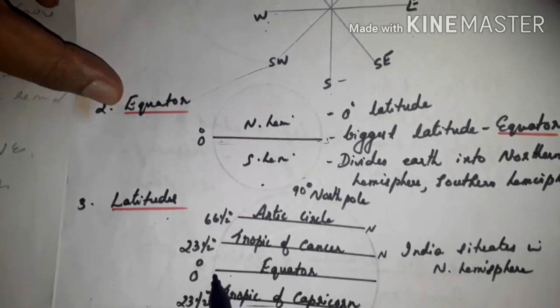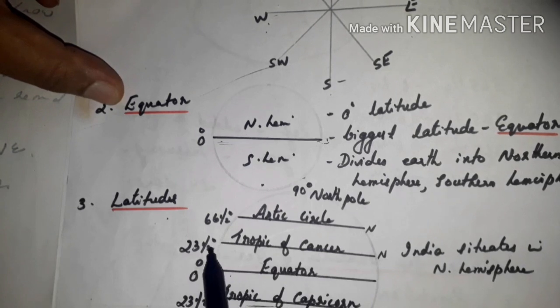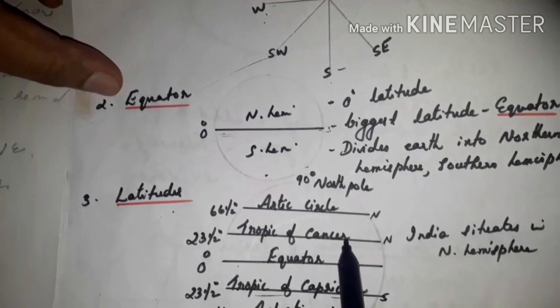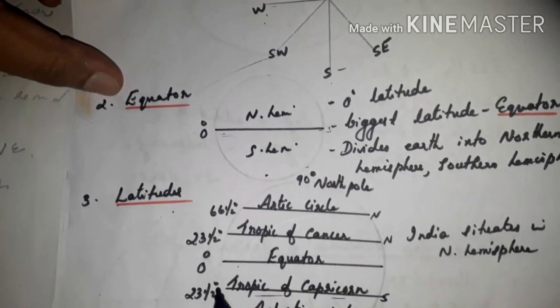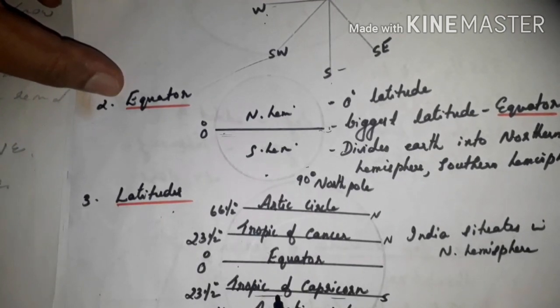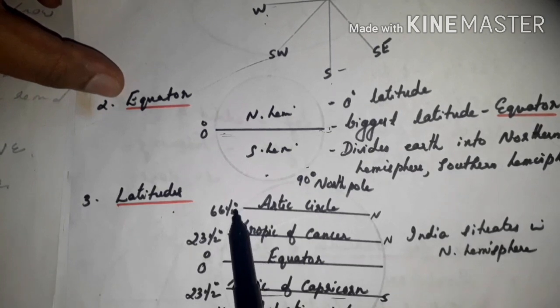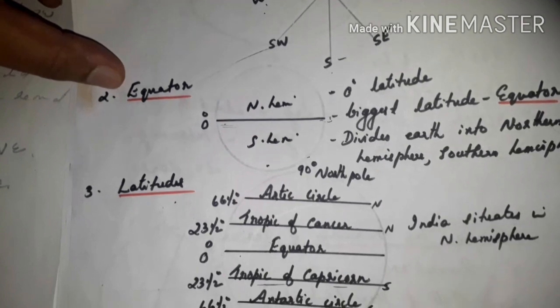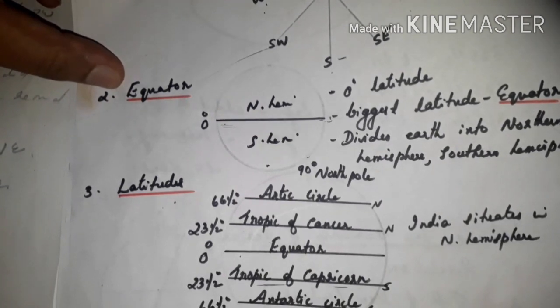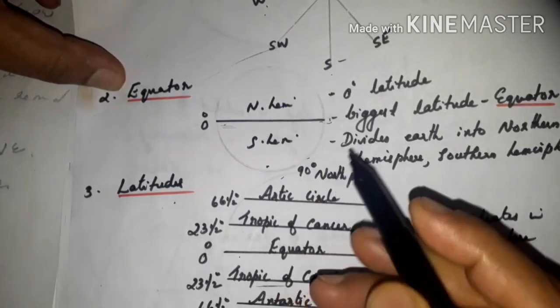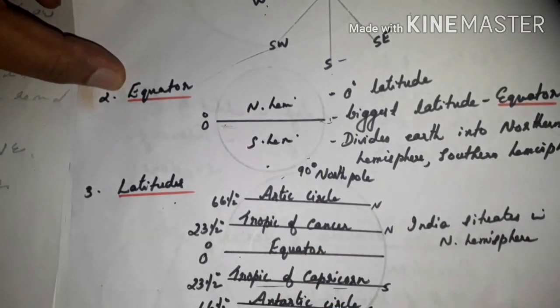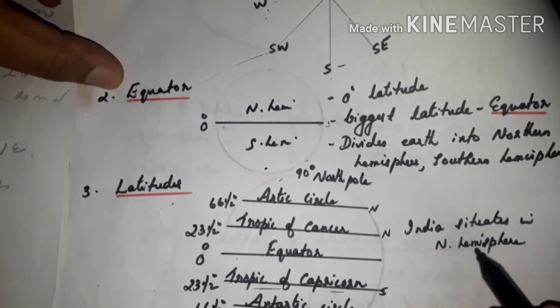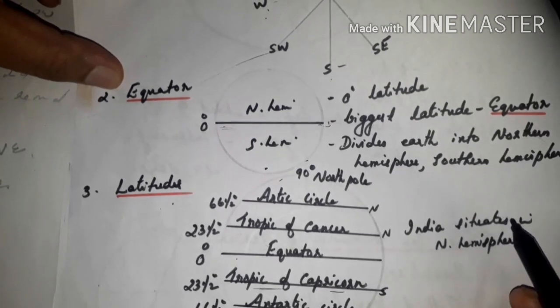The zero degree latitude is the equator. Then here 23 and a half degree latitude is known as Tropic of Cancer. 23 and a half degree south latitude is known as Tropic of Capricorn. Here 66 and a half degree latitude is known as Arctic Circle. Here 66 and a half degree south latitude is Antarctic Circle. And here North Pole 90 degree, South Pole 90 degree. Do you know India situates in which hemisphere? It is in northern hemisphere.